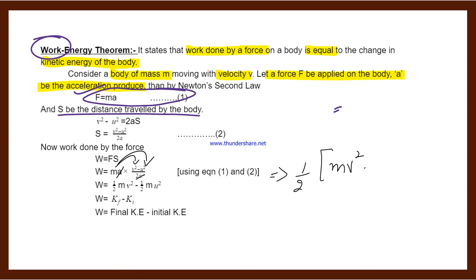...we get mv², and multiplying m with u, we get minus mu². Multiplying this and that, we get ½mv² minus ½mu².